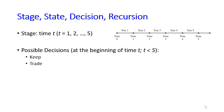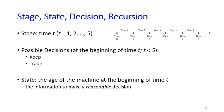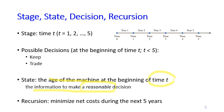The kind of information that we need to make reasonable decisions is the state. The state is the information needed to make a reasonable decision. In this case, the state is the age of the machine at the beginning of time T. Finally, the recursion function we would like to construct is the one that minimizes net costs during the next five years.